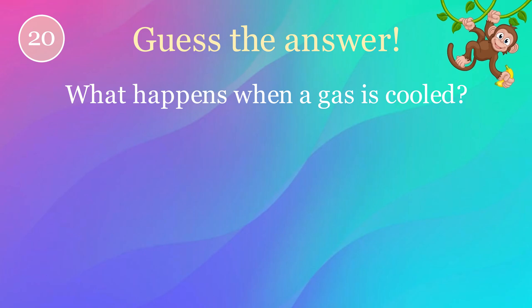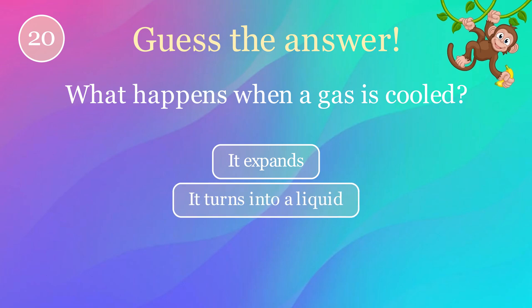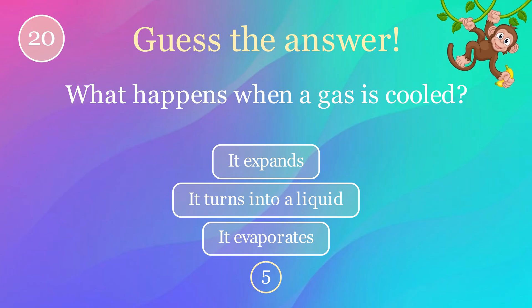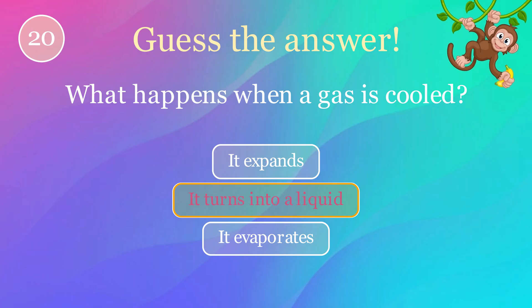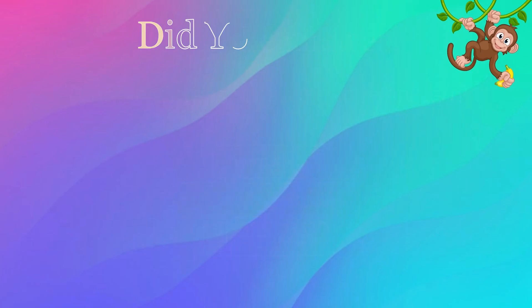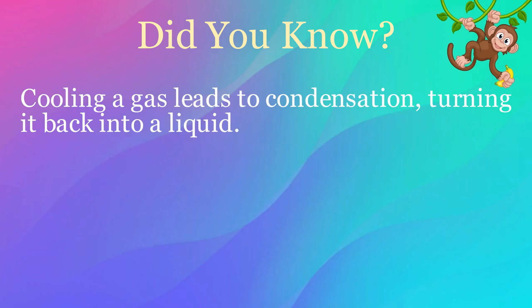What happens when a gas is cooled? Options: it expands, it turns into a liquid, it evaporates. The correct answer is it turns into a liquid. Here's an interesting fact: cooling a gas leads to condensation, turning it back into a liquid.